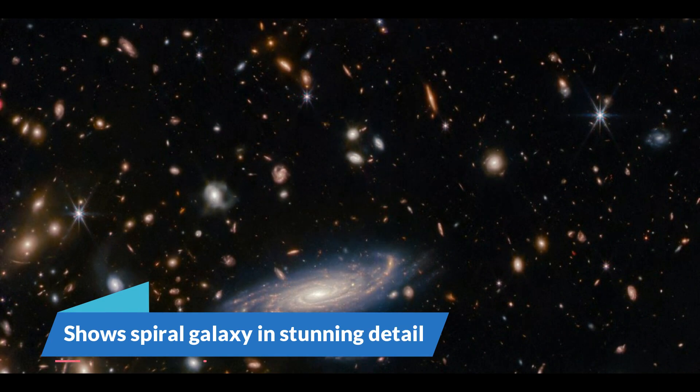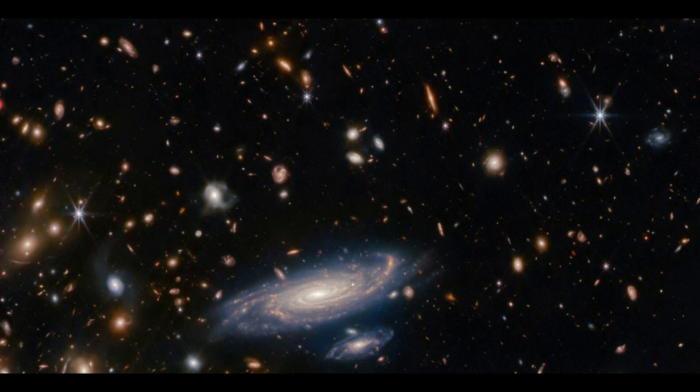Number seven, shows spiral galaxy in stunning detail. A new image from NASA's James Webb Space Telescope depicts a dense field of galaxies and stars with a faraway spiral galaxy standing out in spectacular detail.